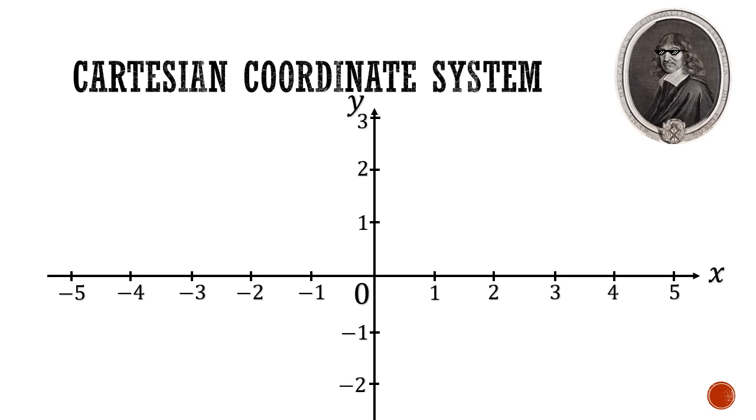Now we can locate a point. Let's take this point A. We are first going to assign a number to this location based on how far it is to the right of the y-axis. We assign this point A a value of 3 because it is 3 units to the right of the y-axis. This distance is also known as the abscissa.